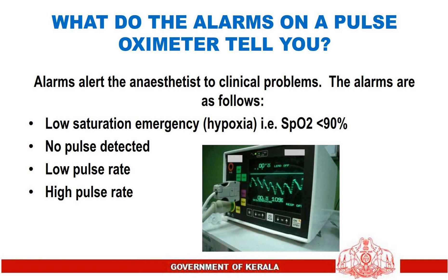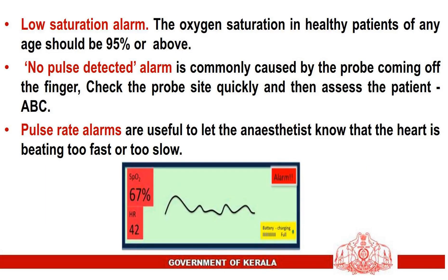What do the alarms on a pulse oximeter tell you? Alarms alert the anaesthetist to clinical problems. The alarms are as follows: low saturation emergency — hypoxia, that is SpO2 less than 90%; no pulse detected; low pulse rate; high pulse rate. The oxygen saturation in healthy patients of any age should be 95% or above. A 'no pulse detected' alarm is commonly caused by the probe coming off the finger — check the probe site quickly then assess the patient's ABCs. Pulse rate alarms are useful to let the anaesthetist know the heart is beating too fast or too slow.